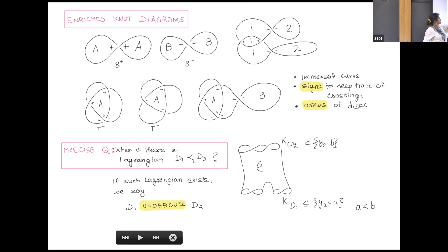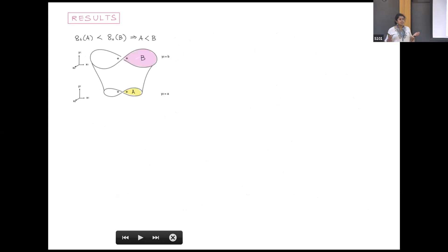Once we have this definition, we can ask it a little more precisely: when is there a Lagrangian? Suppose I have two diagrams, pick any two of these. When is there a Lagrangian so that the bottom knot is given by diagram T1 and the top knot is given by diagram T2? The bottom and top mean in the y2 coordinate. If such a Lagrangian exists, we define this relation that T1 undercuts T2.